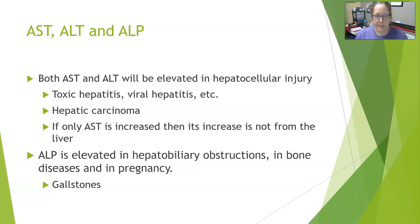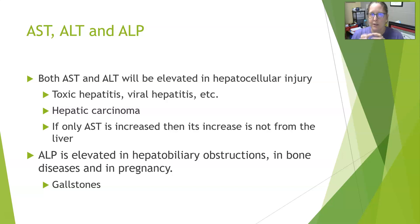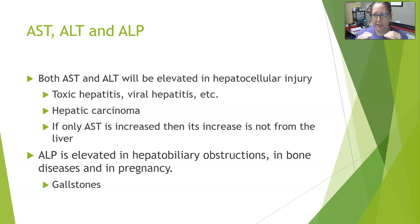AST, ALT, and alkaline phosphatase — both AST and ALT can be elevated in hepatocellular injury, meaning liver cell injury. This is where you see toxic hepatitis, viral hepatitis, and hepatic carcinoma — damage actually happening to the hepatocytes, the liver cells. If only the AST is increased, it could be from outside the liver — muscle, red cells, other sources. But if both AST and ALT are elevated, especially proportionally in the same amounts, then you definitely need to think liver injury.